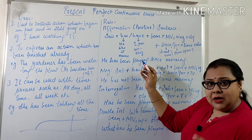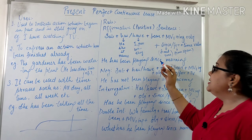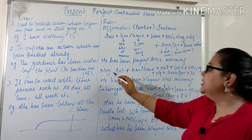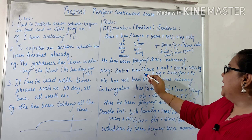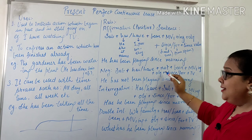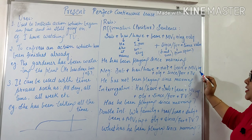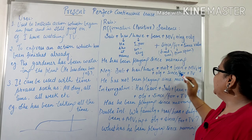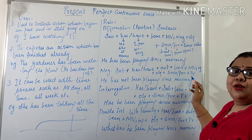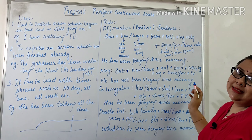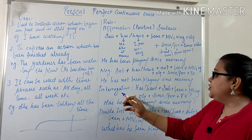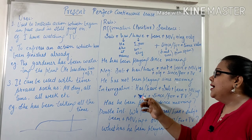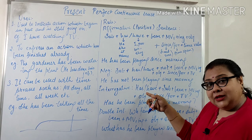In the negative sentence, just one change: Subject + has/have + not + been + main verb (first form + ing) + object + since/for + time value. For example: 'He has not been playing since morning.'